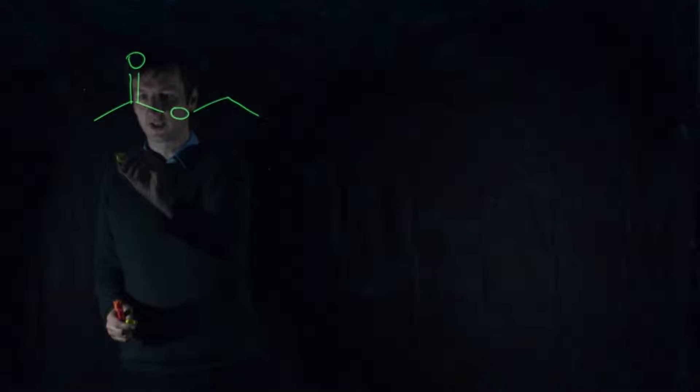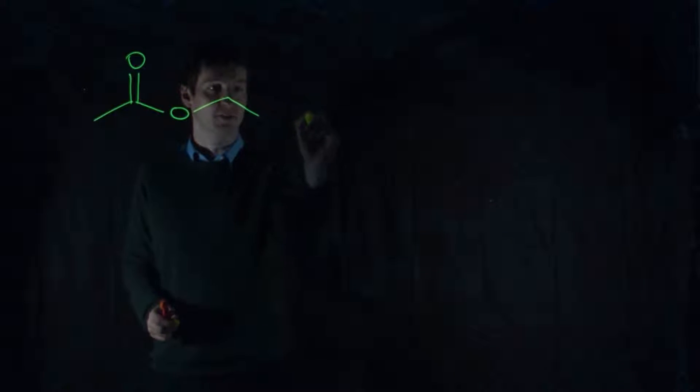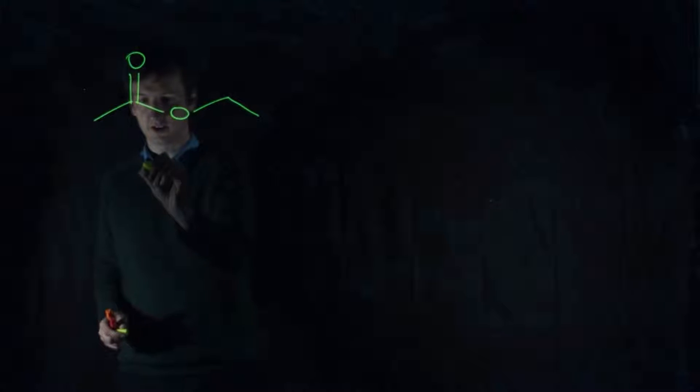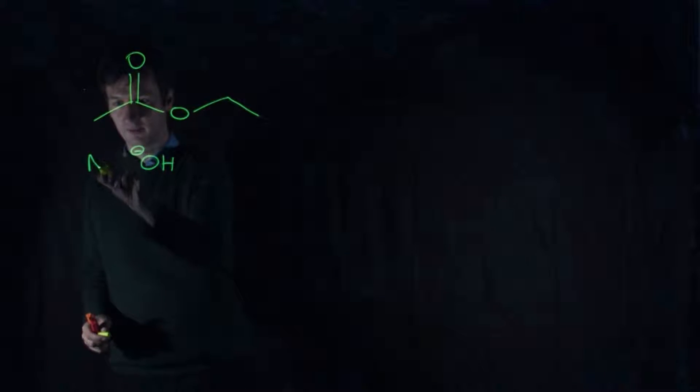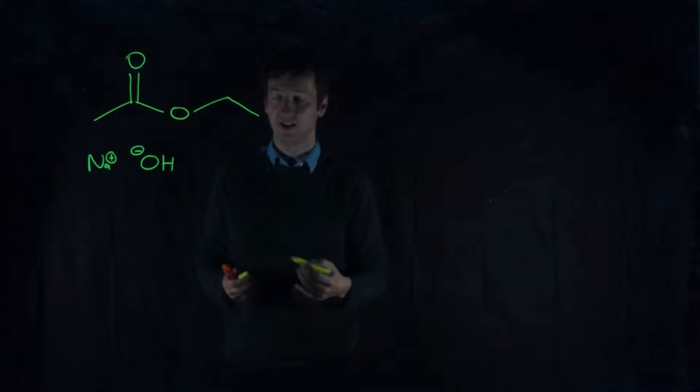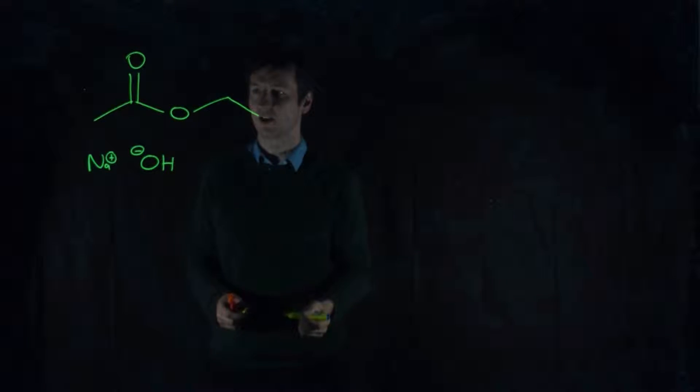And if we're going to do it in base, usually it's done with something like sodium hydroxide. So hydroxide, OH-, and sodium, Na+. And we can draw those out as a pair of ions because they're always going to be dissociated in solution. Because if you remember, sodium hydroxide is a strong base.